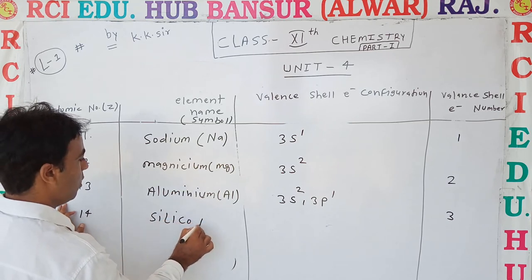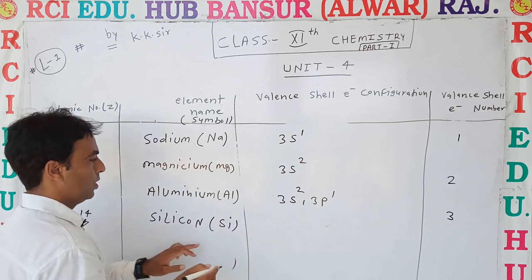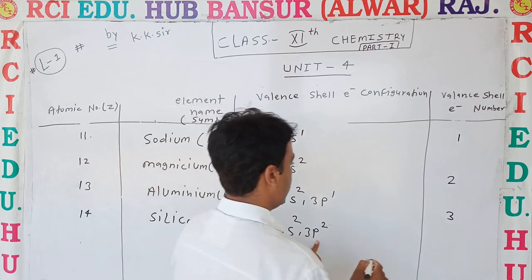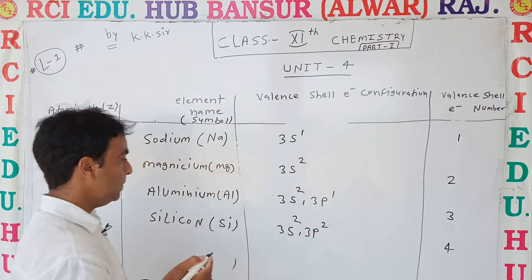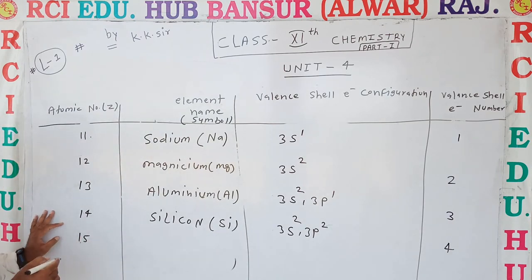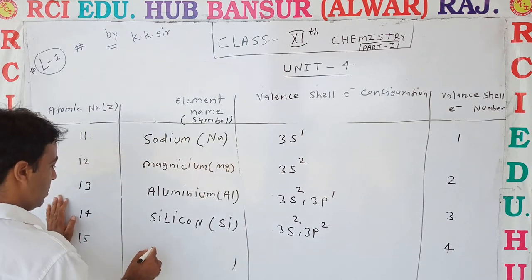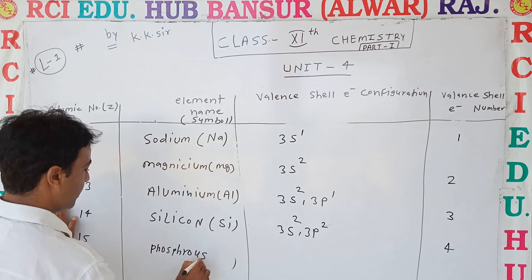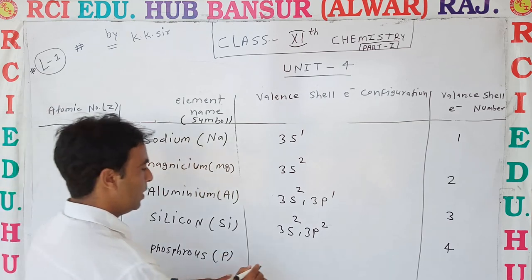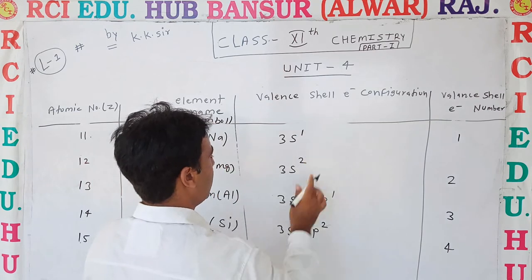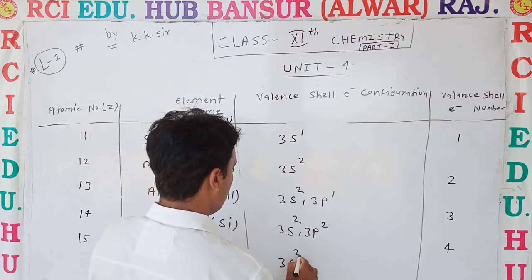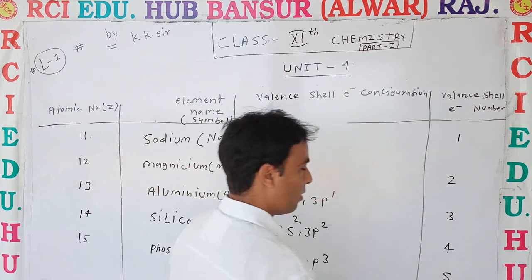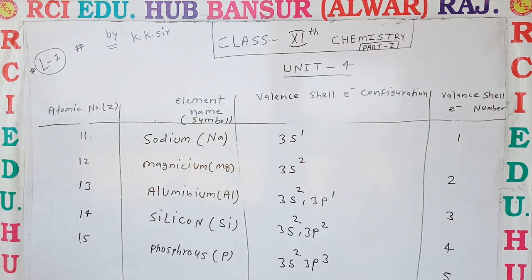Atomic number 14 is Silicon, represented by Si. Its valence electron configuration is 3s2 3p2, giving 4 valence electrons. Atomic number 15 is Phosphorus, represented by P. Valence electron configuration is 3s2 3p3, giving 5 valence electrons.